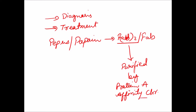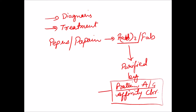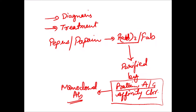Protein A or sometimes protein G is used because they have affinity toward Fab and F(ab')2 fragments. This affinity chromatography is used for recovery and purification purposes. Protein A affinity chromatography is also used in the recovery of monoclonal antibodies, so if you see a question mentioning protein A binding, it is talking about antibody recovery.